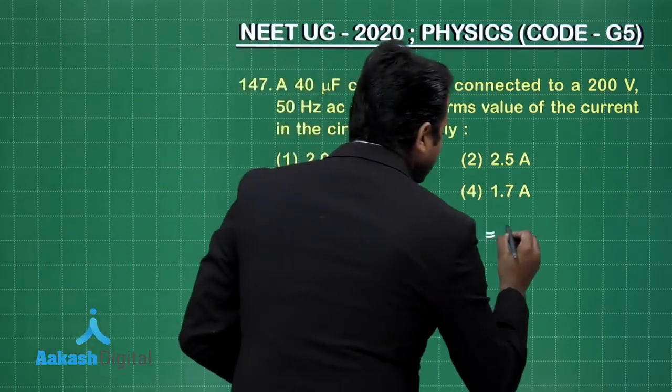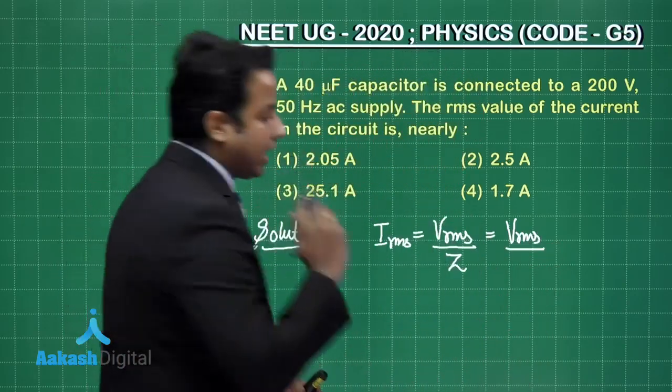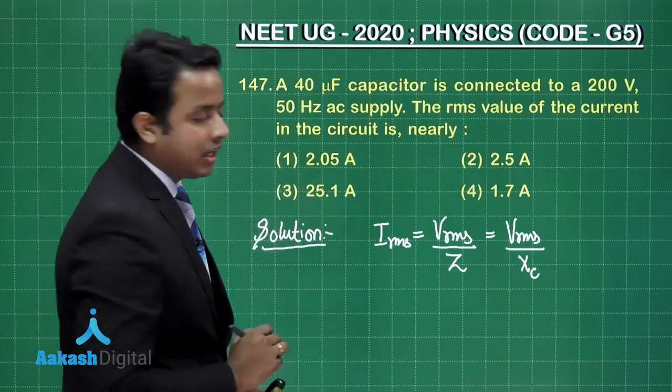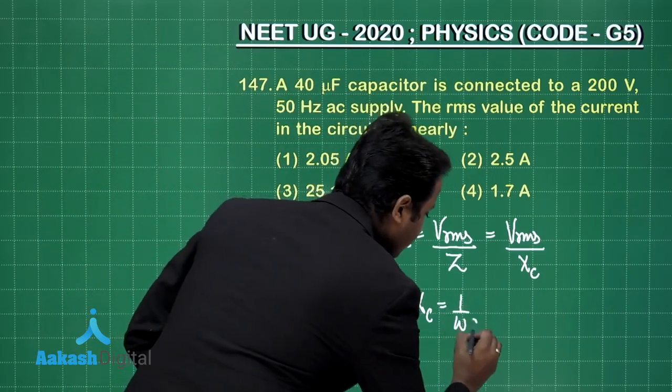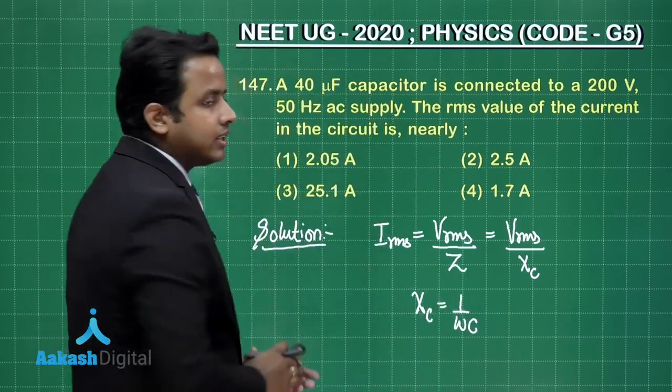So, obviously, I should replace the Z value with the capacitive reactance that is XC and I hope you remember the relation that capacitive reactance actually 1 by omega times C where omega is the angular frequency C is the capacitance.